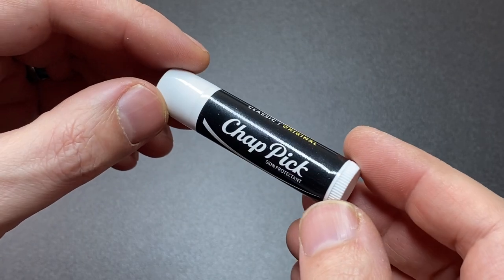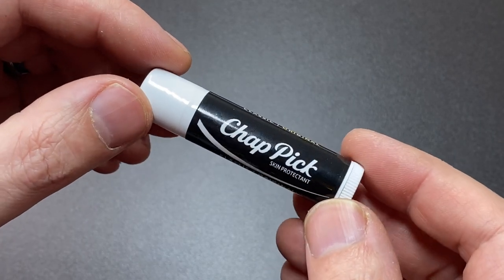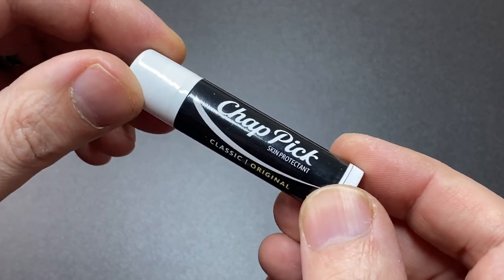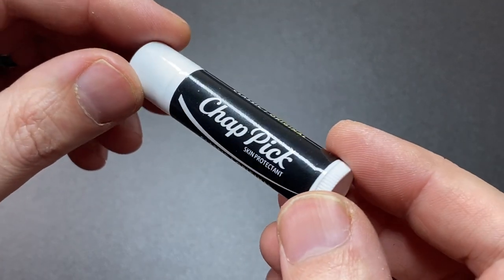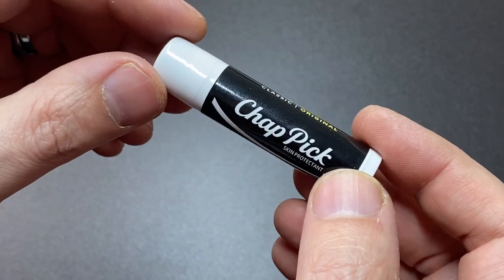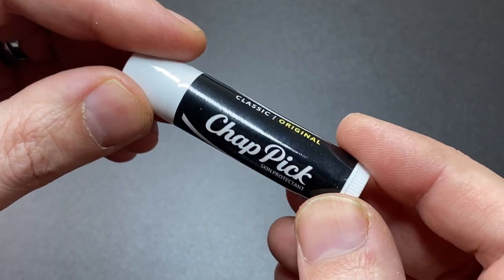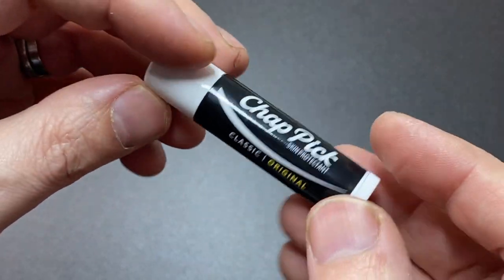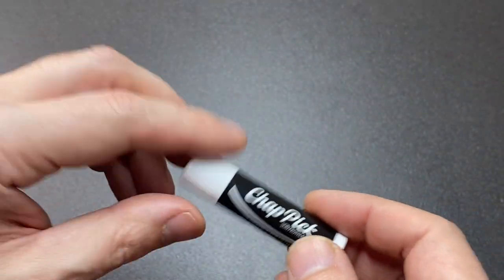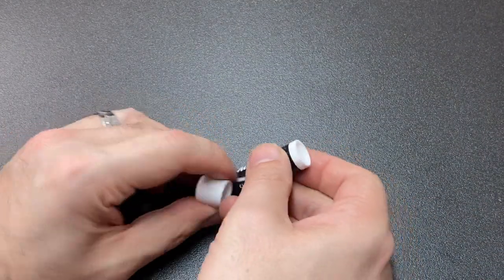Hello again, it's Lock Noob, and today we get to look at something very fun. This is a ChapPick. You may have already seen these on social media, but from the outside it looks like a lip balm tube or chapstick. It's a very cool little design that even says skin protectant, but that's not what's on the inside. Let me show you.